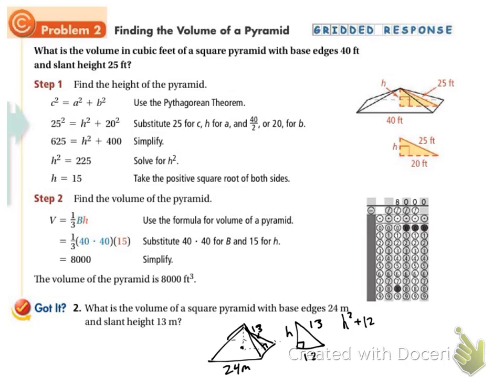H squared plus 12 squared equals 13 squared. Remember, we've got to stick the 13 in for the C because it's the hypotenuse. 12 squared is 144. 13 squared is 169. I'll subtract 144.